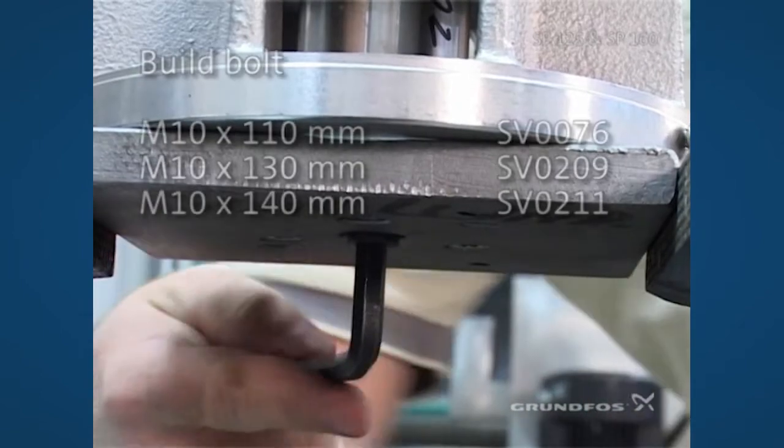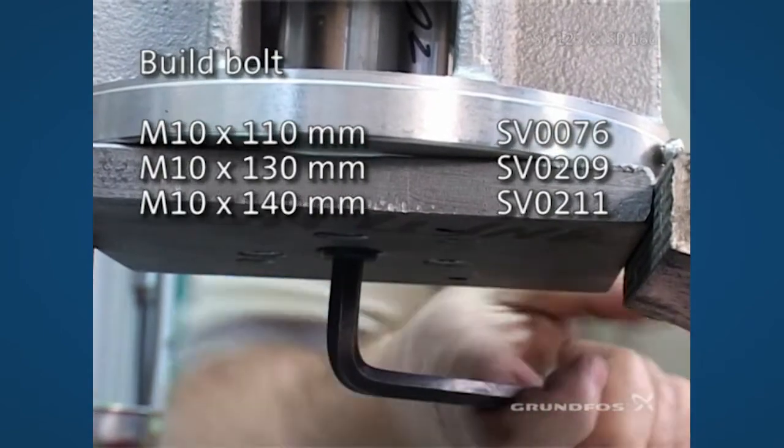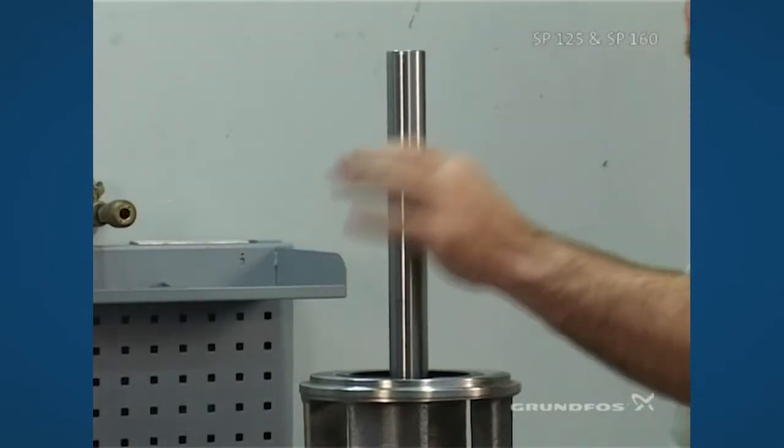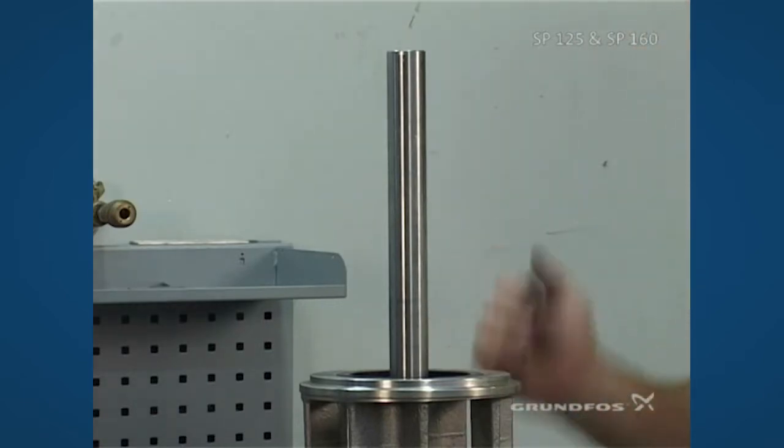Take your Allen wrench and tighten down the bolt. After you finish tightening the bolt, you want to make sure that the shaft doesn't rotate on the assembly.